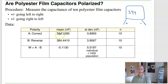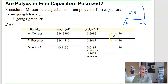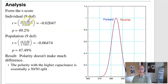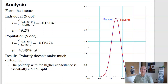When I collect the data, I've got mean, standard deviation, and sample size for A and B. The difference is minus 0.1 nanofarad. The standard deviation is 5.5 for an individual, or 1.74 for the population when dividing variance by sample size. The t-score for an individual is 0.02, corresponding to 49%. The t-score for the population is minus 0.06, corresponding to 47%. Basically there's no difference between the forward and reverse polarity — the PDFs are essentially the same.